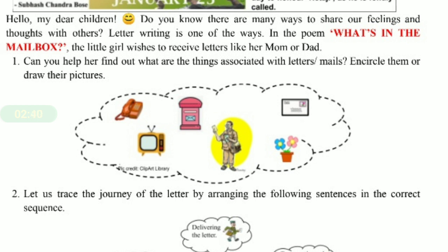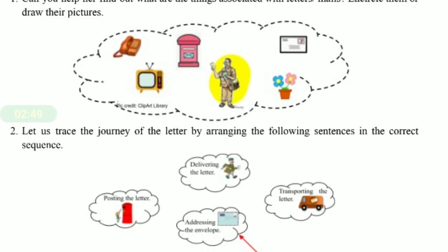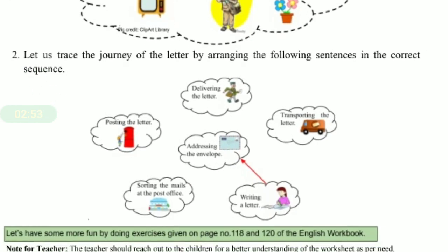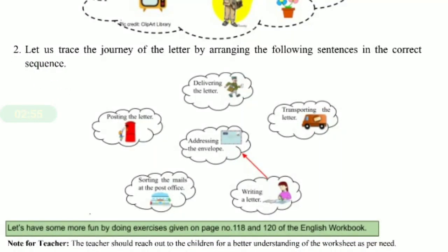Circle the things related to the activity. For the second part, let us trace the journey of a letter by arranging the following sentences in the correct sequence.